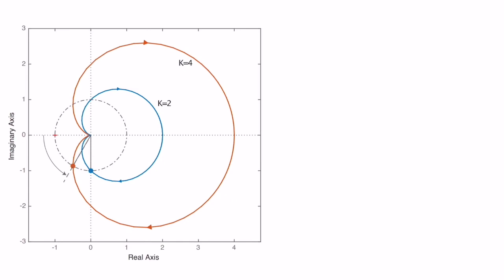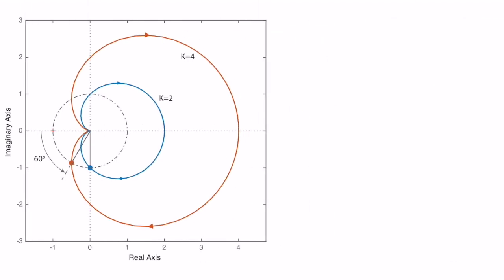Looking at the MATLAB-generated Nyquist plots, the first system (k = 2) has a phase margin of 90 degrees, and the second (k = 4) has a phase margin of 60 degrees. Gain margin is infinite in both cases. So when we increase the gain, the gain margin remains unchanged but the phase margin decreases.